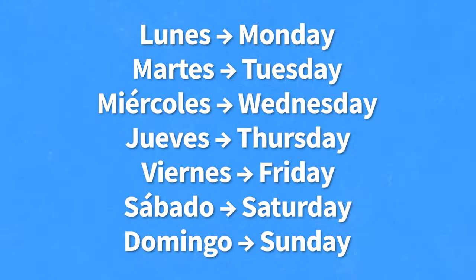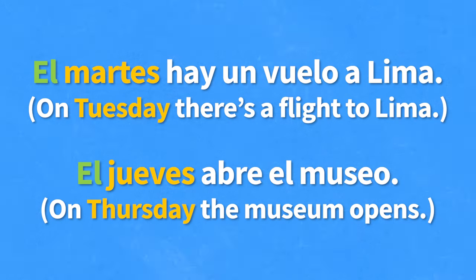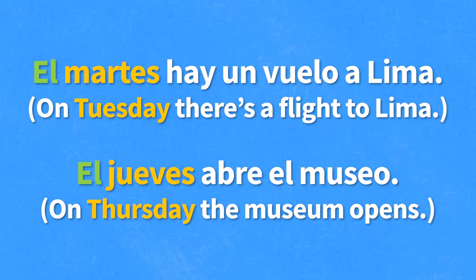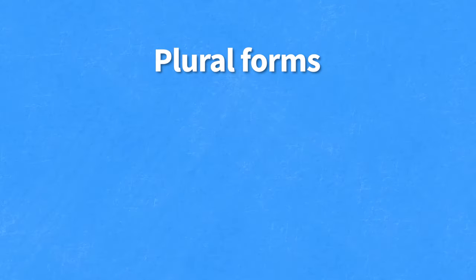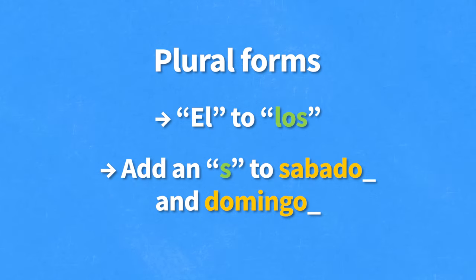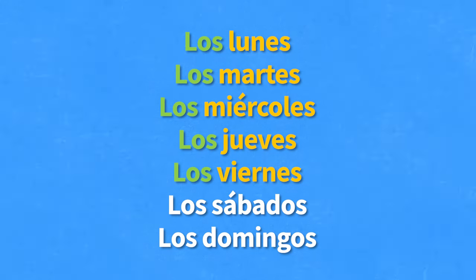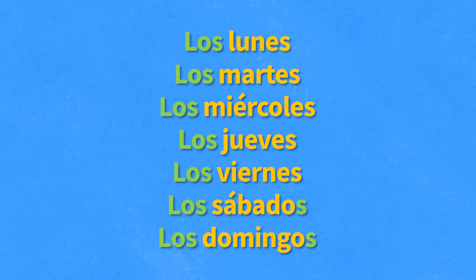And of course, the last one is domingo, and domingo is Sunday. Every one of the days of the week follows the masculine article el. For example, el martes hay un vuelo a Lima, meaning on Tuesday there is a flight to Lima, or el jueves abre el museo, which means on Thursday the museum opens. To form the plural of the days of the week, el simply changes to los, and you add an es only to sábado and domingo. So the plural forms would be los lunes, los martes, los miércoles, los jueves, los viernes, los sábados, los domingos.